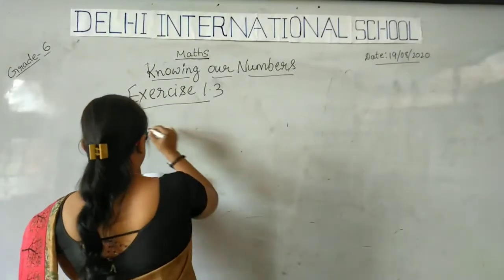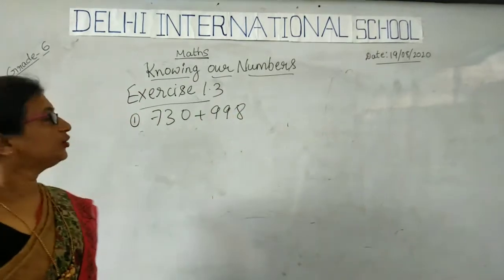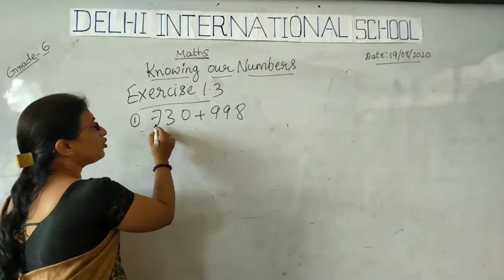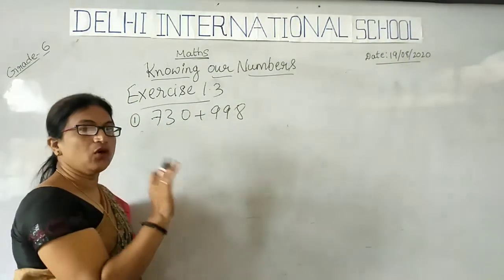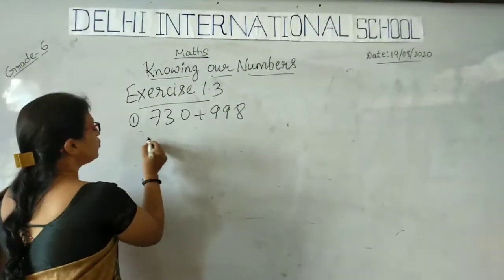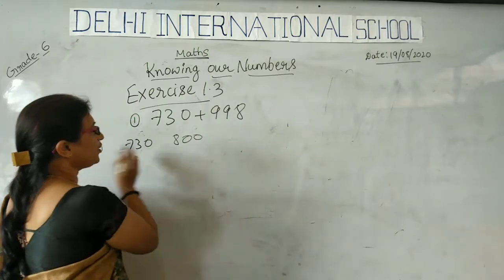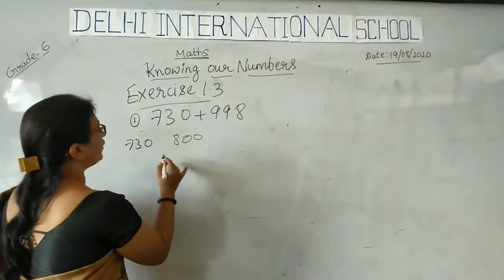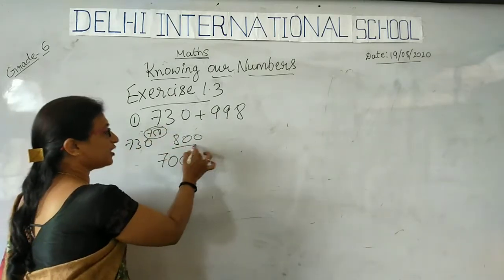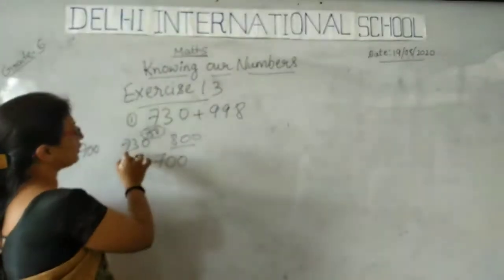The first problem is 730 plus 998. We have to estimate — that means we have to bring the number to the nearest digit, the nearest value, and then add simply. So 730 is between 700 and 800. Which number is it nearer to? Whatever number is more than 750 comes near to 800, and less than 750 comes to 700. So 730 is near to 700.